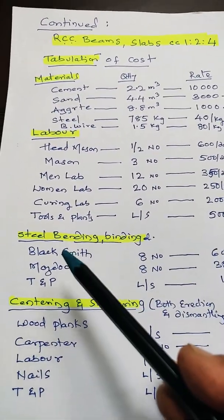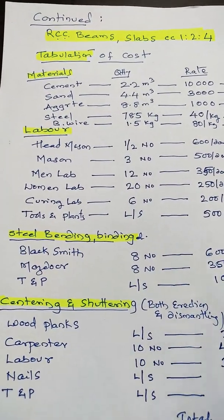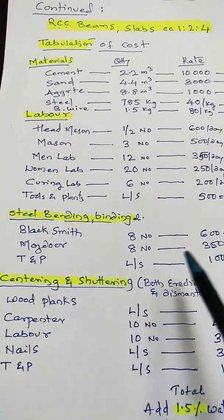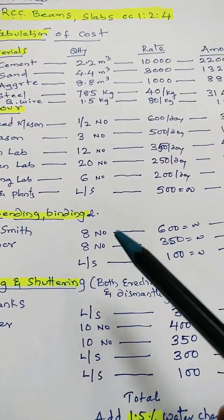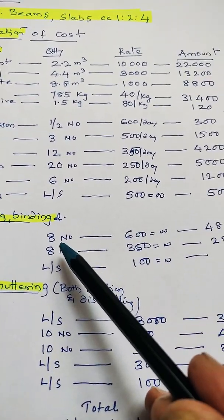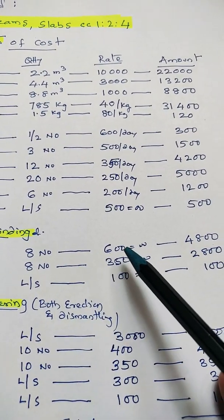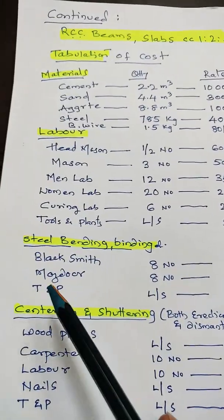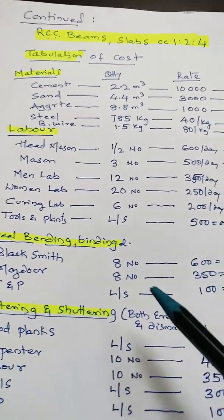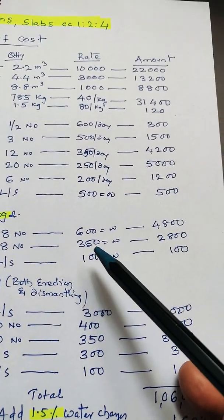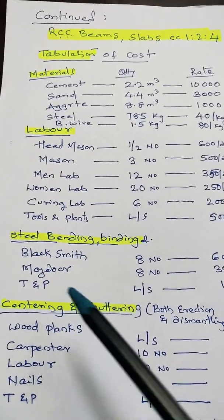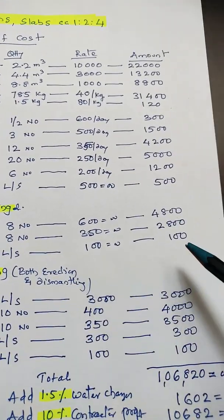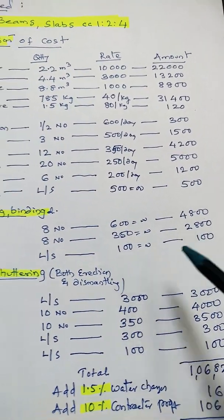Steel bending and binding is taken separately. Blacksmith: 8 numbers for 10 meter cube at 600 rupees = 4,800. Majdur or helper: 8 numbers at 350 rupees = 2,800. Tools and plants for them: lump sum 100 rupees.